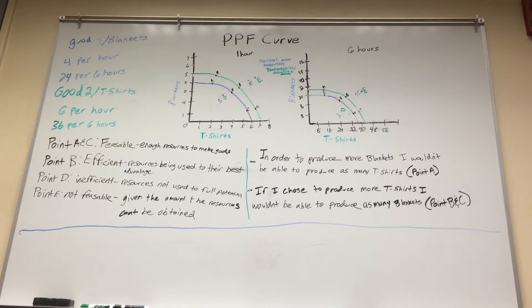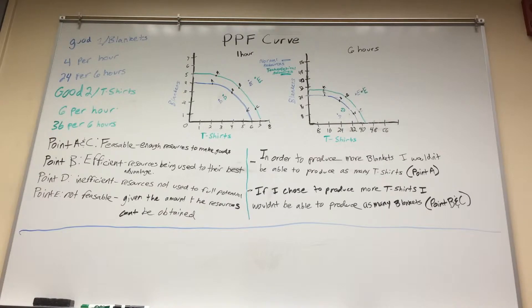For the blankets I believe I can make four per hour or 24 per every six hours. For good two which is the t-shirts I believe I can produce six per hour or 36 per every six hours.